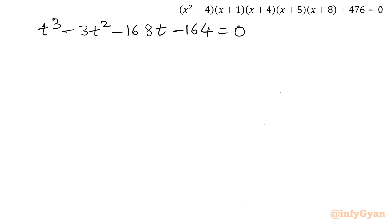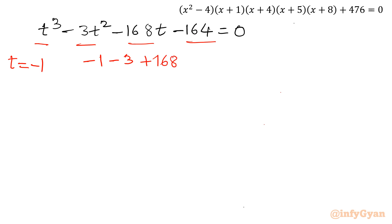Looking at the coefficients 1, -3, -168, -164: if I add their absolute values without sign I see a pattern, suggesting t = -1 might be a root. Let me verify by putting t = -1: (-1)³ - 3(-1)² - 168(-1) - 164 = -1 - 3 + 168 - 164 = 0. Yes! So t = -1 is a solution of the given cubic equation.